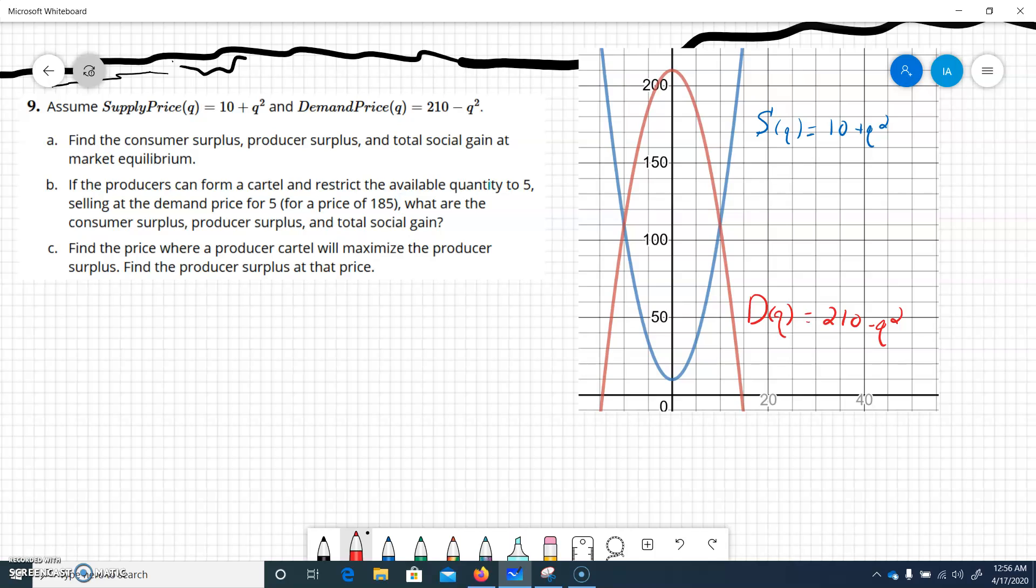Producers form a cartel. Basically, a cartel can control the line of production, so that's more of a business term. But it says they're going to control that and set the quantity to 5 and a price of 185, and we're supposed to do the same thing we did before.